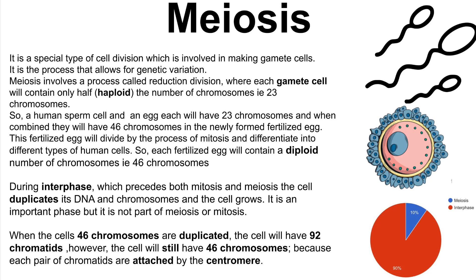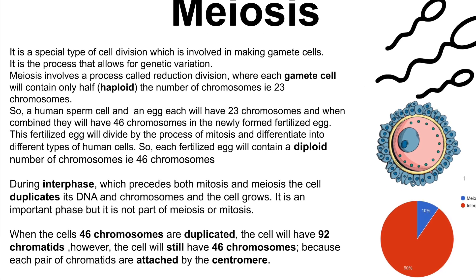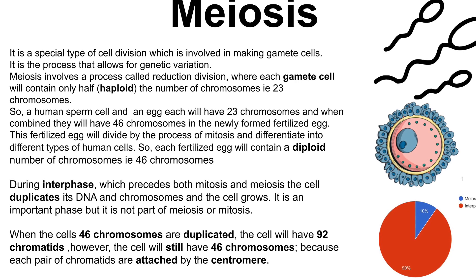This fertilized egg will divide by the process of mitosis and differentiate into different types of human cells. Each fertilized egg will contain a diploid number of chromosomes, which is 46 chromosomes.